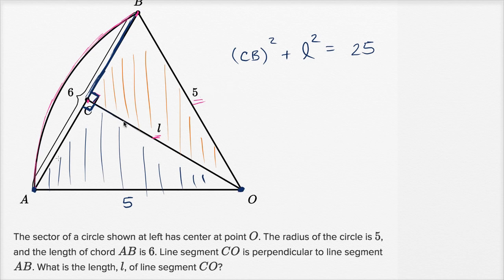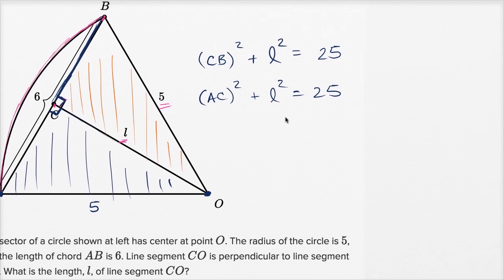So we could say, just by the Pythagorean theorem, the length of segment AC squared plus L squared is equal to 25. So when you see it in these terms, you see very clearly that AC is going to be equal to CB.